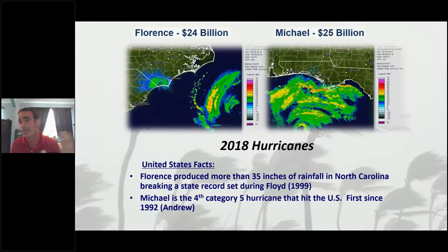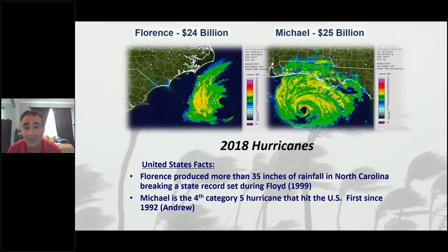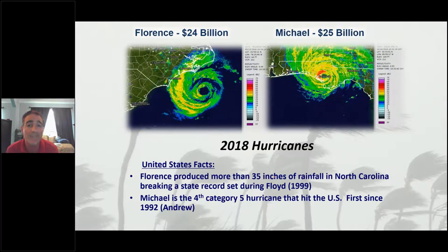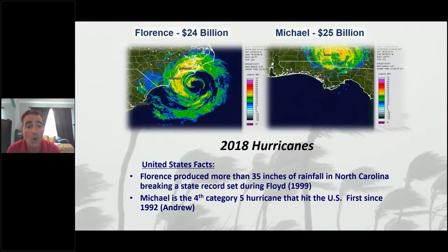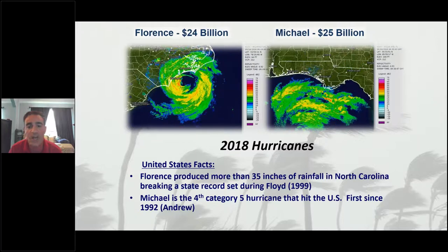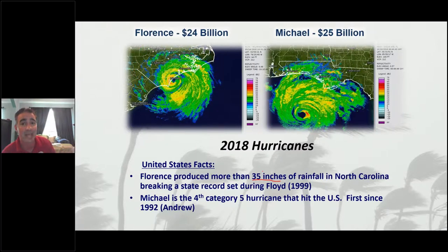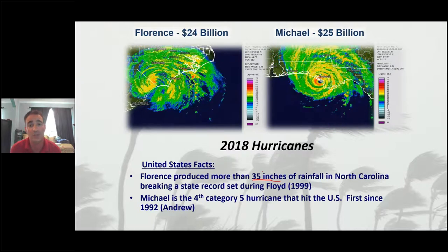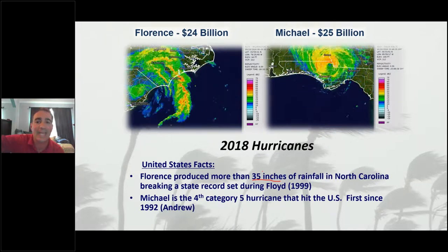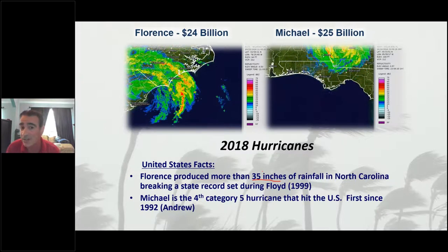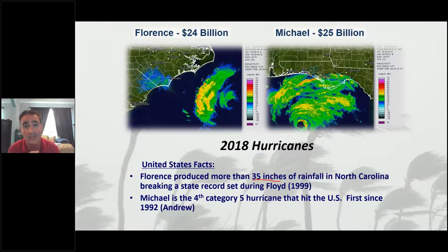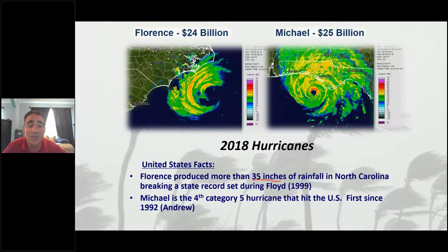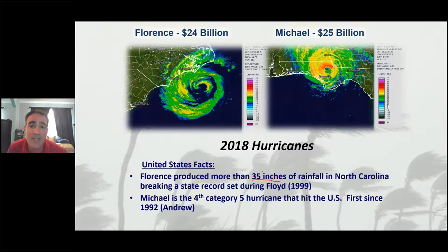In 2018, the season was a bit of a respite compared to 2017, but we still had two very impactful hurricanes. Hurricane Florence caused about $24 billion in damage, primarily across the Carolinas, with southeastern North Carolina seeing 35 inches of rain — a state record previously set by Floyd in 1999. Hurricane Michael caused about $25 billion in damage across the Florida panhandle and inland. Remarkably, Michael was only the fourth Category 5 hurricane to ever impact the United States, going back to the 1850s. The previous one was Andrew in 1992.